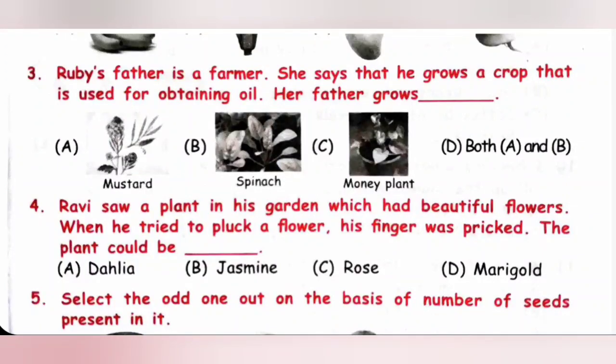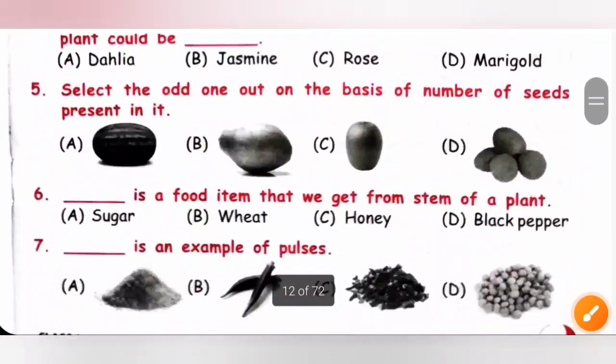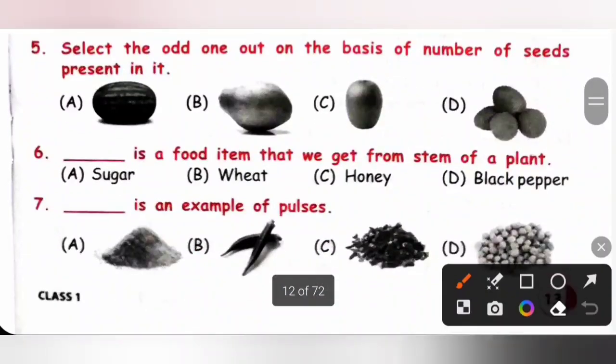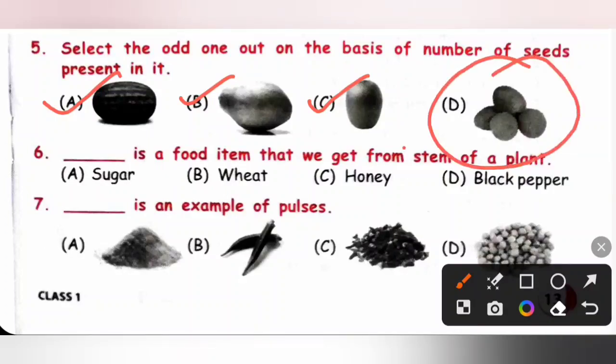Fifth one, select the odd one out on the basis of number of seeds present in it. Option A: watermelon, B: pea, C: papaya, D: kiwi, litchi. We know watermelon, papaya and kiwi are multi-seeded fruit while litchi is a single-seeded fruit. So the odd one out is option D.